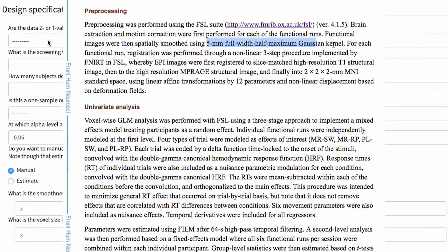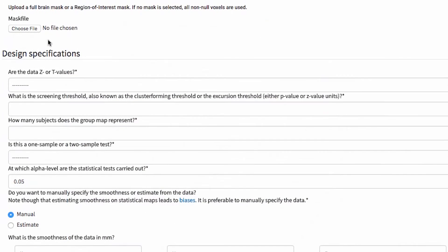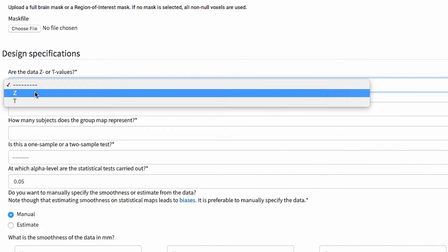And lastly, what is the smoothness of the data in the X, Y, Z directions, and the voxel size in the X, Y, and Z directions? In this case, we know that they smoothed with a five-millimeter smoothing kernel. We also know that the final smoothness is probably going to be significantly greater than that. For right now, I'm just going to put in an estimate of eight in every direction. Also, we know that the voxel size is two by two by two.